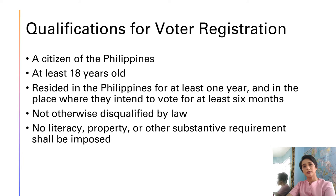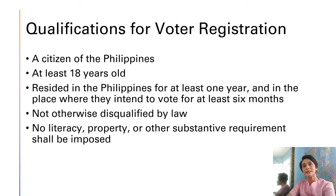In order to exercise your right to suffrage, you need to pass the qualifications to vote. We must register as a voter first, and in order to register we must meet these qualifications: first, you must be a citizen of the Philippines; you must be at least 18 years old; you must have resided in the Philippines for at least one year, or in the place where you intend to vote for at least six months; and you should not otherwise be disqualified by law.